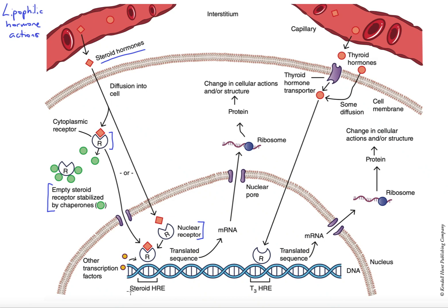Those two will actually bind to a transcription-modifying region of DNA known as the hormone-responsive element, or HRE. Once we bind the hormone-receptor complex to that region, we activate that segment of DNA to be transcribed and translated into functional proteins. And so the response to our steroid hormones is to produce new or more proteins to modify the structure and/or function of that particular cell.